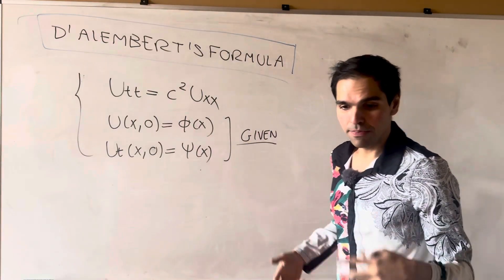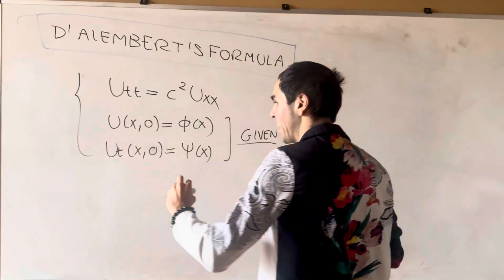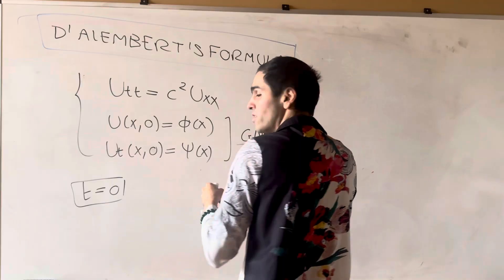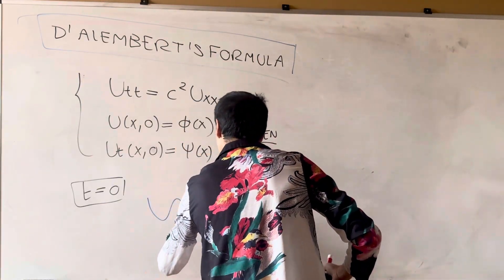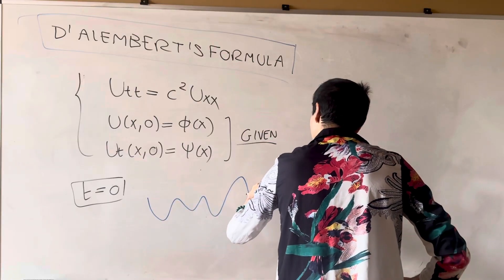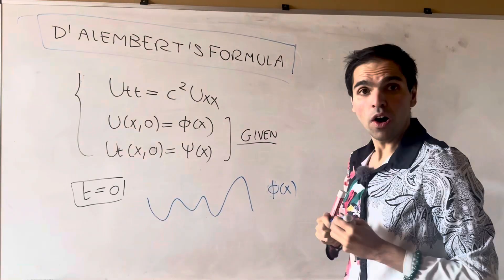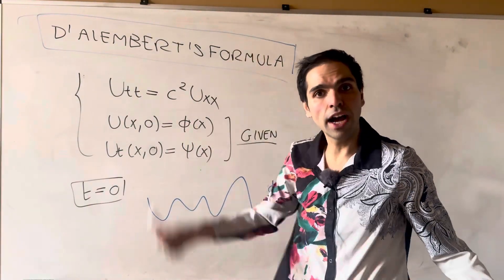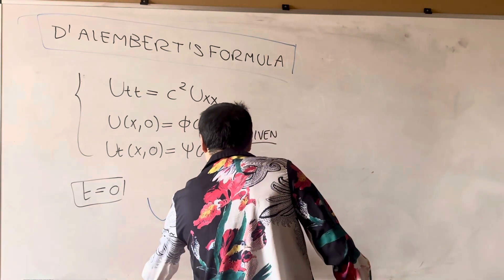Sometimes called the initial data. And the way to visualize this is, at t equals zero, we have what's called the initial profile of the wave. Just the way the wave looks initially. And I also tell you how it moves. At every point, I tell you at which speed it moves up and down. And that is what this psi of x is.